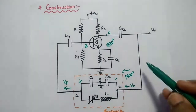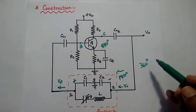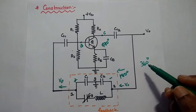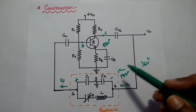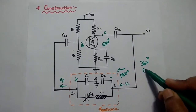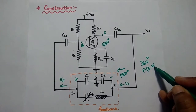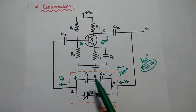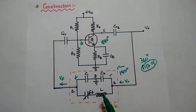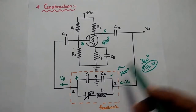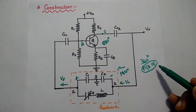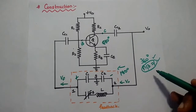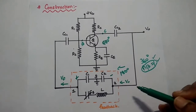The total phase shift in this circuit is 360 degrees. The first condition of Barkhausen criteria is satisfied. The second condition requires A·β equal to 1. To achieve this, we adjust the values of C1, C2, C3, and L. By adjusting the feedback network, we can get A·β equal to 1. So both conditions are satisfied to get sustained oscillation using the CLAP oscillator.